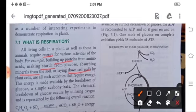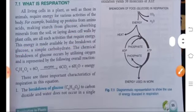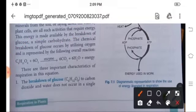So this energy is available by the breakdown of glucose, which is a simple carbohydrate. Now the chemical breakdown of glucose occurs by utilizing oxygen and is represented by the following equation: C6H12O6 plus 6O2 is equal to carbon dioxide, water and energy.